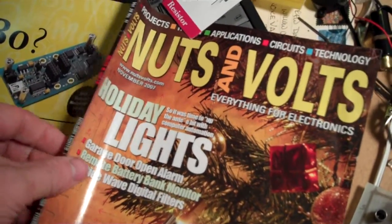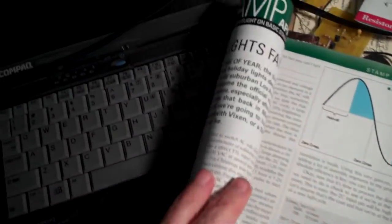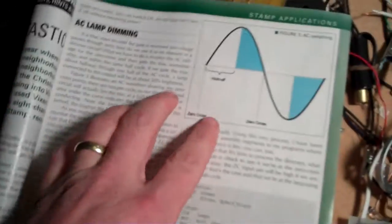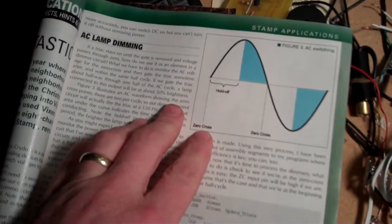From my November 2007 issue of Nuts and Volts, I was reading this about controlling lights and AC light dimming, and it's talking about here a zero cross.